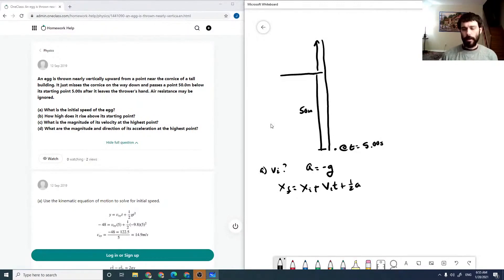Our initial velocity is what we're solving for. We'll call xi zero. In this case xf is minus 50 meters and it equals our vit, so our t is five seconds, plus one half minus 9.8 meters per second squared.